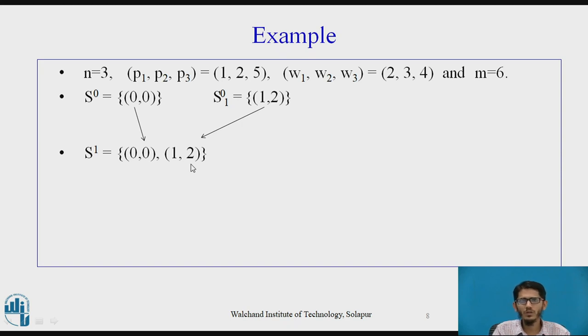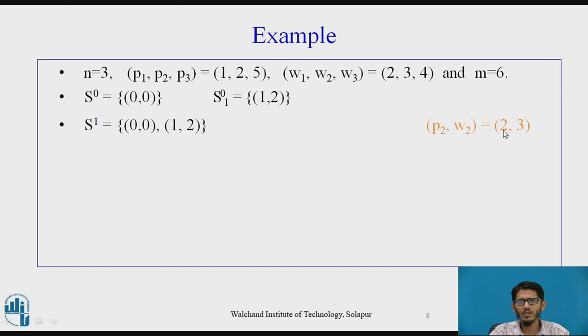After this, we are going to find out s11. To find s11, we first of all require the next p, w tuple that is p2, w2 equal to (2, 3). Now, this (2, 3) would be added to each and every tuple of s1 and we get s11. So, (2, 3) when added to (0, 0) gives (2, 3) and (2, 3) when added to (1, 2) gives (3, 5).